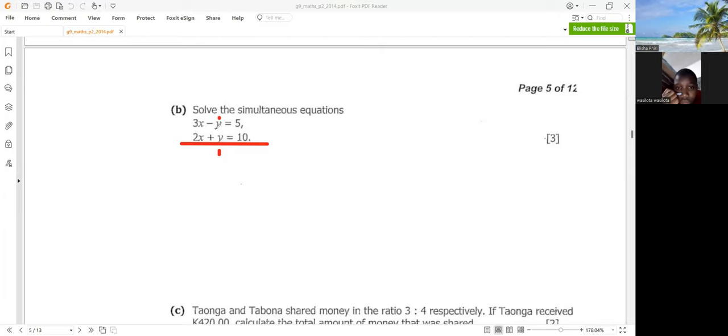Now, the moment you identify equal coefficients, what you need to do is consider the signs that those two coefficients are carrying. So this one here has a negative sign. This one has a positive sign. So now, when the signs are different, what you would do is you add throughout. The core essence of doing that is to eliminate those two coefficients which are equal.